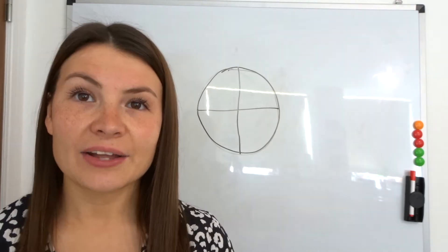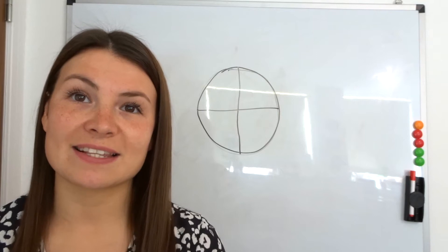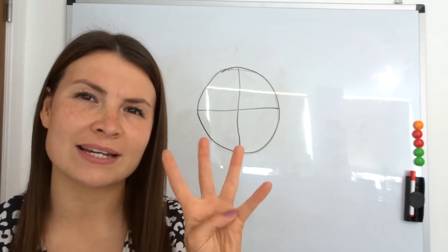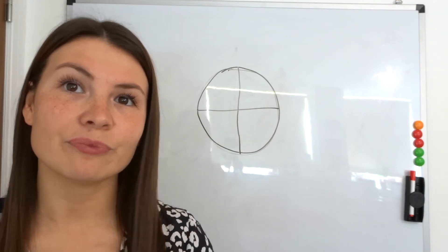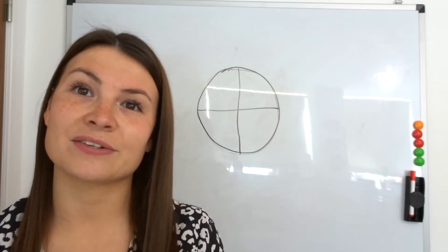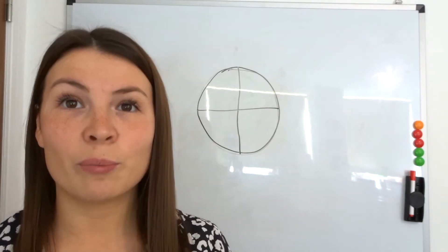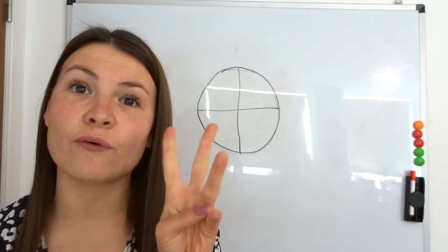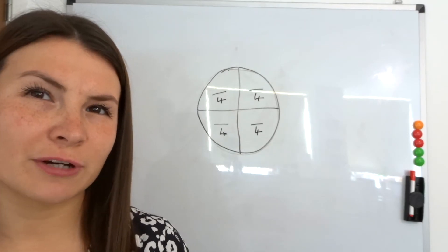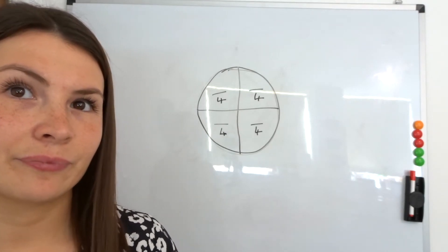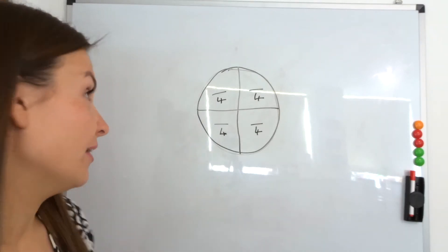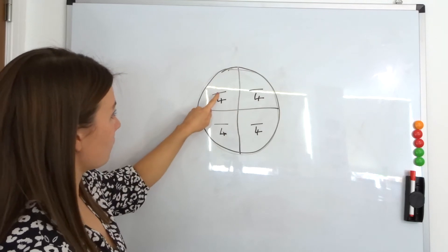Going off what we've just learned about the denominator and the numerator, can you figure out what fractions I've just split this circle up into now? So it's four equal parts. Where does that number go? Good - it goes on the bottom, because the denominator is always how many equal parts we have got altogether. So altogether we've got four equal parts, so that needs to go on the bottom.